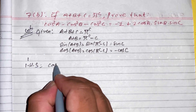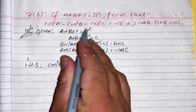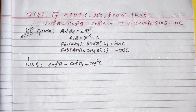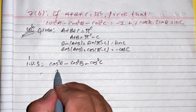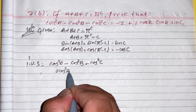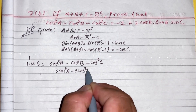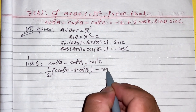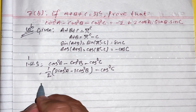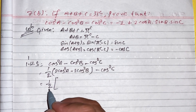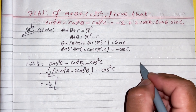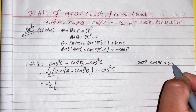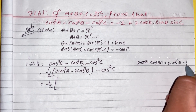LHS is cos square a minus cos square b minus cos square c. Multiplying by one-half and two to apply double angle identities. Using cos 2a equals 2 cos square a minus 1, so 2 cos square a equals cos 2a plus 1.